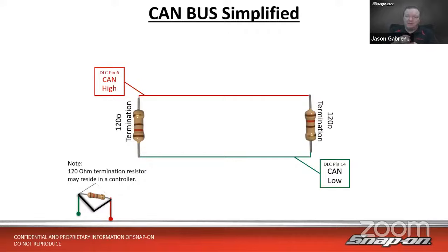This is the central gateway module — it translates all the wires. Zooming in to the top right where the diagnostic connector is, we have the 16-pin DLC: pin 16 is always power, pins 4 and 5 are always ground. There are only four empty pins on this DLC, so that gives 12 pins doing something. The orange line goes back to the gateway module, and that is an Ethernet data line — perhaps their factory scan tool uses that for diagnosis. The CAN bus also goes back to the gateway module.